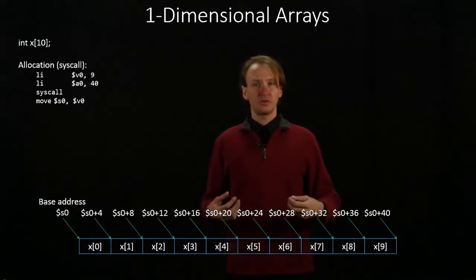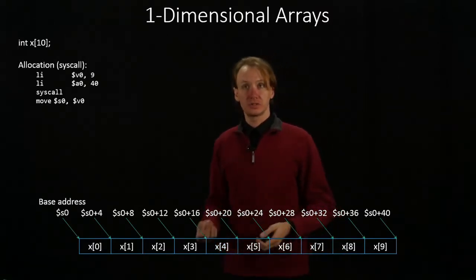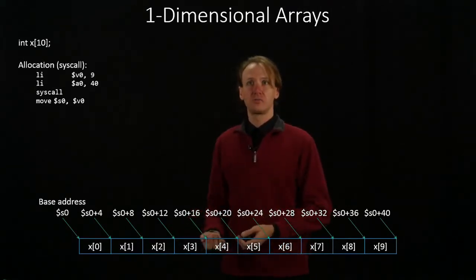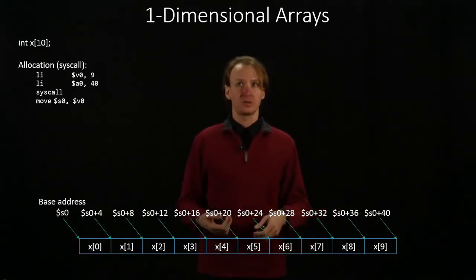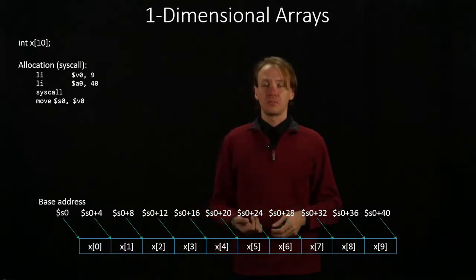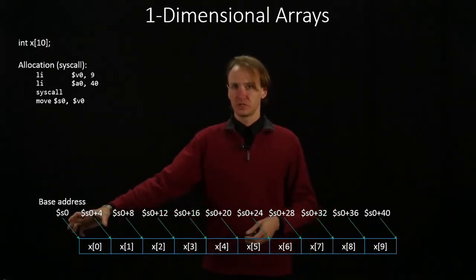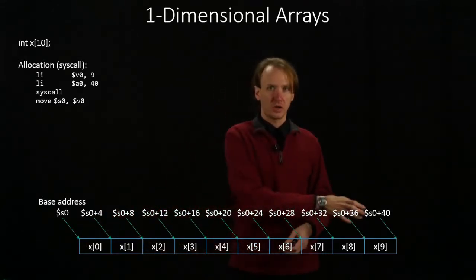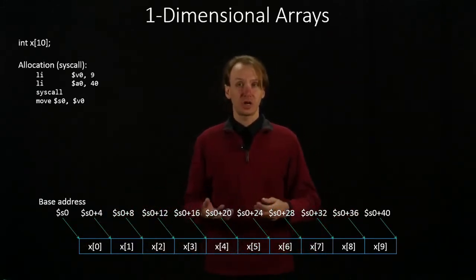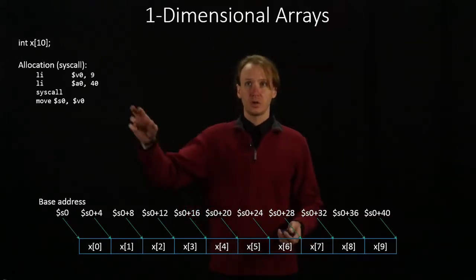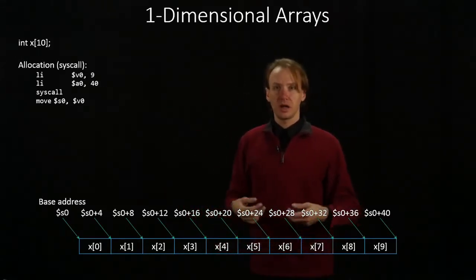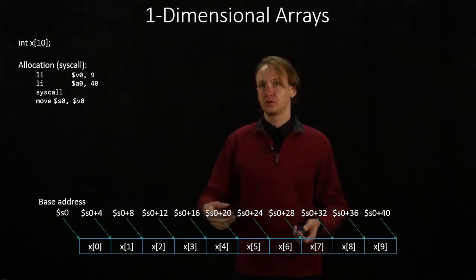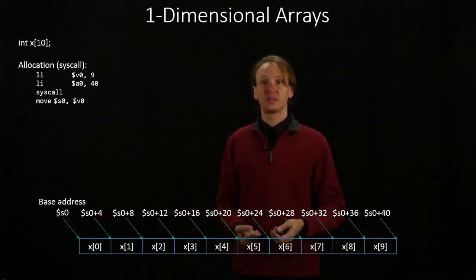So I've got two different ways I could allocate this array. I can either use a system call, in which case I stick 9 into v0, I stick the size of the array into a0. Because my array is composed of integers, each of which are 4 bytes large, and I have 10 of those, 4 times 10 gives me 40, so I put in 40. Then I have the system call, and I can copy the pointer into s0, so that I have my base address available.